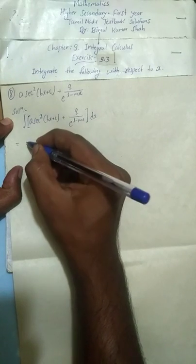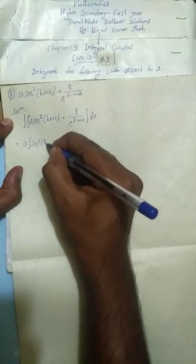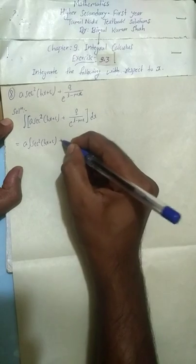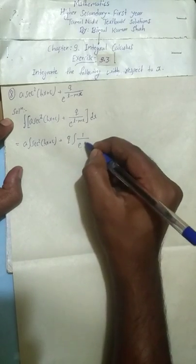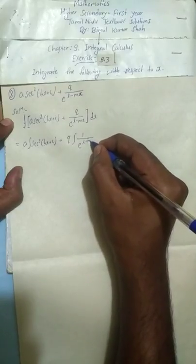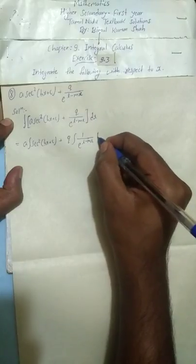We need to integrate this total expression with respect to x, so write dx. Now split it — separate it. Here a is a constant, so you can take it outside. Similarly, q is a constant here, so you can take q outside. Then we have the integral of one by e to the power (l minus mx), and then dx.